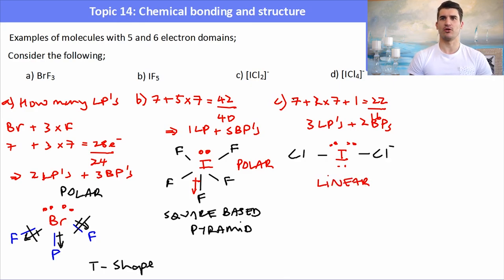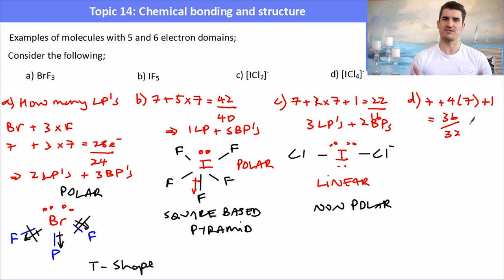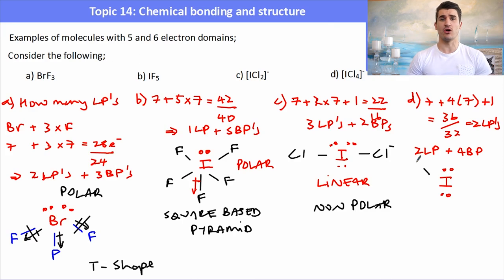For ICl4−: 7 plus 4 times 7 plus 1 gives 36 electrons. The closest octet is 32, so we're 4 electrons away — 2 lone pairs. With 2 lone pairs and 4 bonding pairs, that's 6 electron domains, giving a square planar arrangement with lone pairs above and below the plane. The ICl dipoles all cancel out, so ICl4− is non-polar.